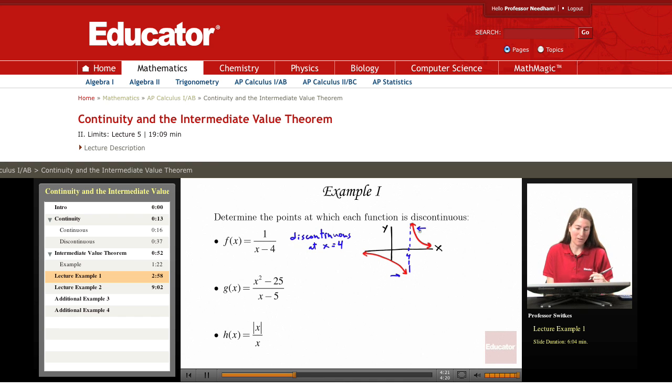This function is definitely discontinuous at x = 4, and an intuitive way to think about continuity is to think about whether you could draw this curve and pass through x = 4 without taking your pencil off of the paper, and we can't do that for this function.